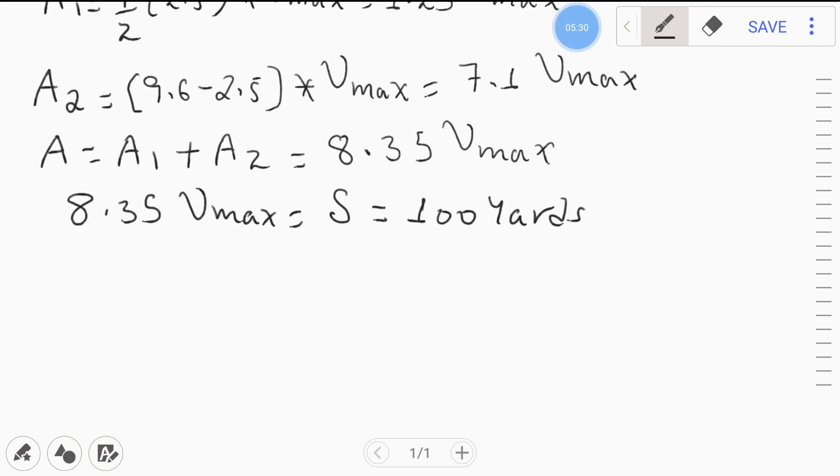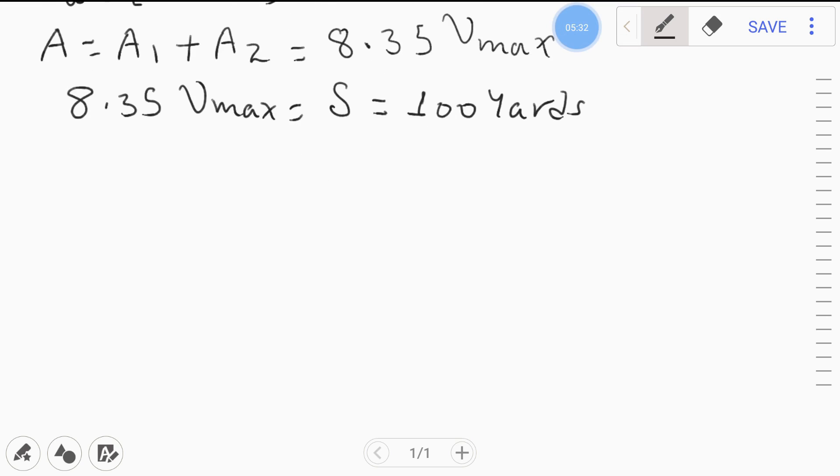Now v_max is simply 100 over 8.35. V_max will be 100 over 8.35, and it will become 11.98 yards per second.